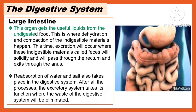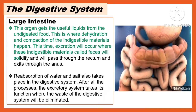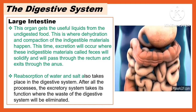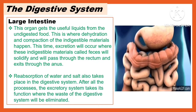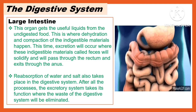Another part of the digestive system is the large intestine. This organ gets the useful liquids from the undigested food. This is where dehydration and compaction of the indigested materials happen. Excretion will occur where these indigestible materials called feces will solidify and will pass through the rectum and exit through the anus. Reabsorption of water and salt also takes place in the digestive system. After all the processes, the excretory system takes its function where the waste of the digestive system will be eliminated.